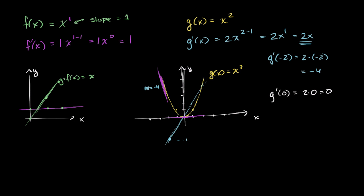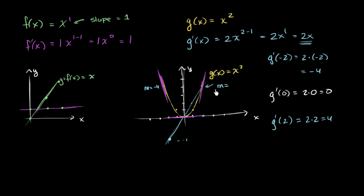And what if you go to x equals 2 — what is the slope of the tangent line there? Well, the tangent line looks like a fairly steep positive slope. What is our derivative telling us based on the power rule? g prime of 2 is going to be 2 times 2, which is equal to 4. It's telling us that the slope over here is 4 — and that seems completely, completely reasonable.